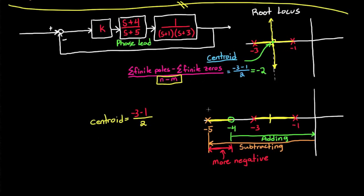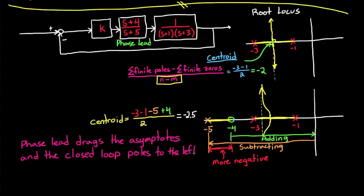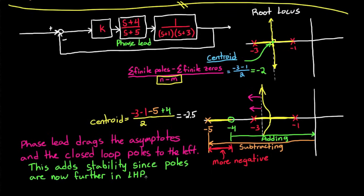So that means that our net gain in the numerator is minus 1, and that our new centroid is now at minus 2.5. Or as you've probably guessed by now, by adding a lead compensator, we've essentially dragged the asymptotes further into the left-half plane. So now as we increase the gain of our system, the closed-loop poles will follow these lines instead. So all else being equal, we've added stability to our system by moving the closed-loop poles further into the left-half plane. And we've done all of that with a lead compensator.